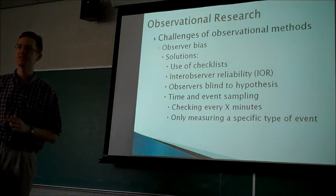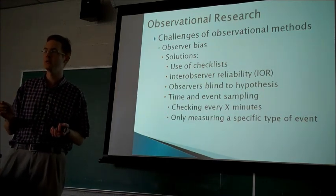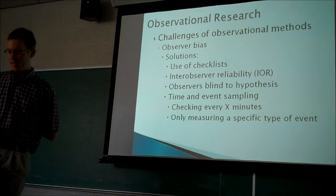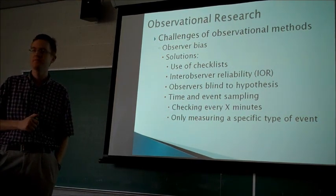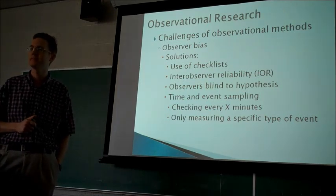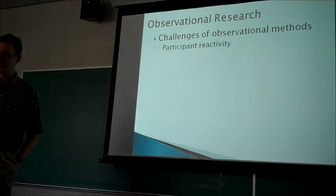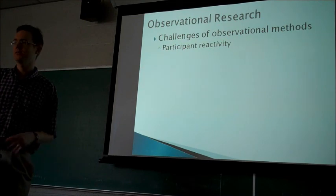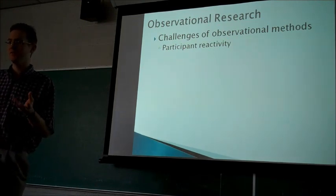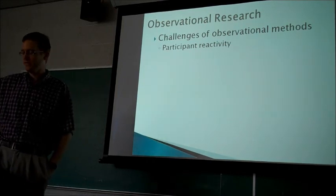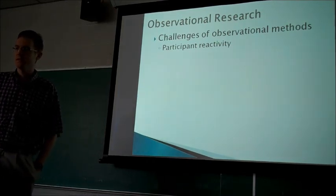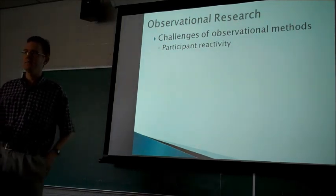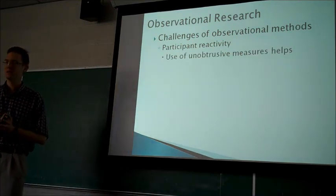They might only be interested in a certain type of interaction between two people. Another big issue is participant reactivity — when participants react to the realization that they're being observed, or if researchers accidentally influence participants in some way. The best way to get around this is to have unobtrusive observers or to use other types of unobtrusive methods.